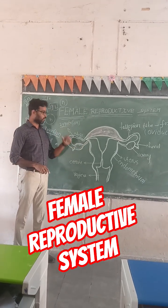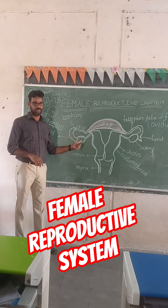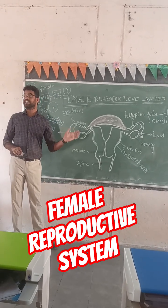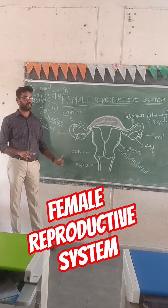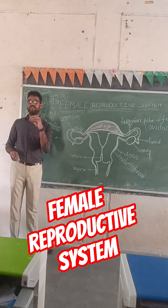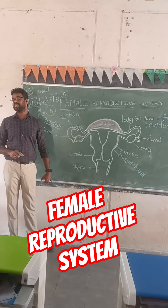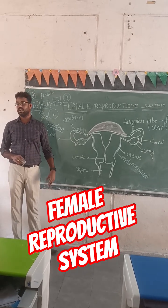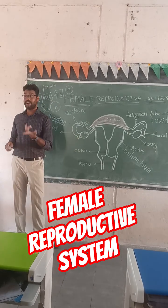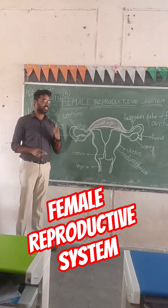After the ovum is fully developed, it is released from the Graafian follicle — flushed out of the Graafian follicle. This process is called ovulation. Ovaries also produce female hormones: estrogen and progesterone.